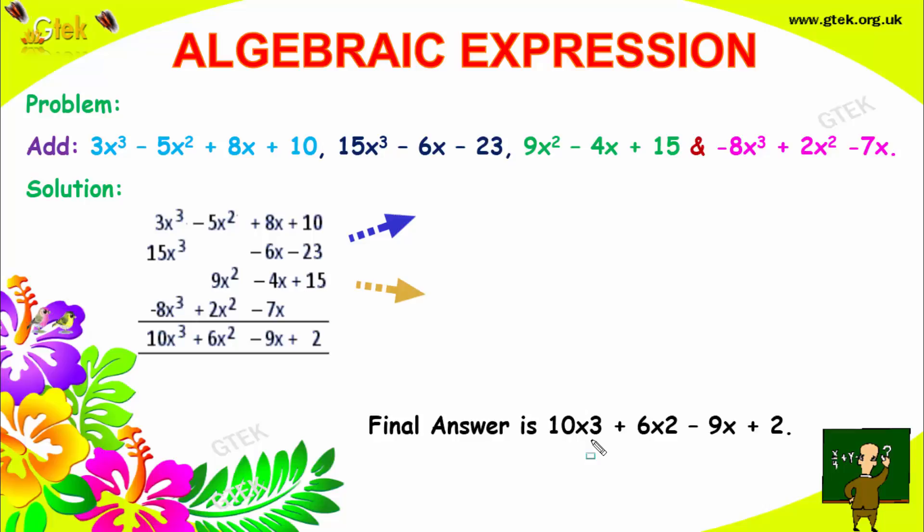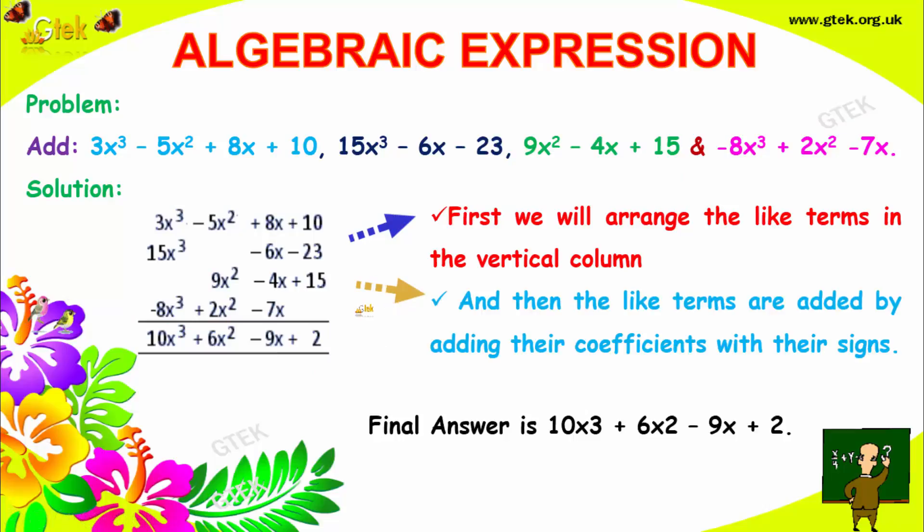You can see we got four terms here. The question is we have to add term a, term b, term c, and term d. What you have to do is arrange the like terms in the vertical column, and then the like terms are added.